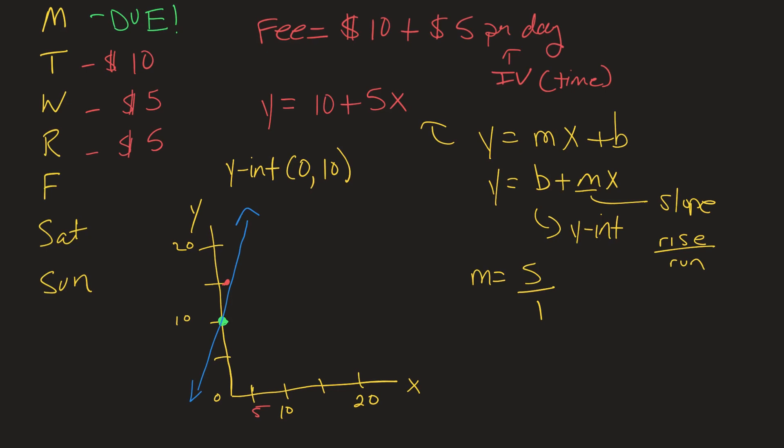And that represents the line of our fee schedule up here where we're actually getting charged. Now of course there is no negative time in this case. So actually this part of the graph in practical terms doesn't really matter. So we just start at our first day of being late, $10, and just keeps going up.